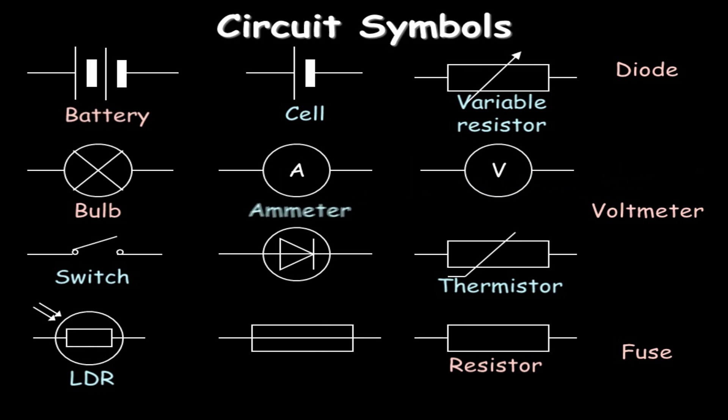To measure electricity, the current, we use an ammeter, capital A in the middle. And we can also measure the power or the voltage with a voltmeter. And a few other components are a diode and also a fuse. Be familiar with those circuit symbols.